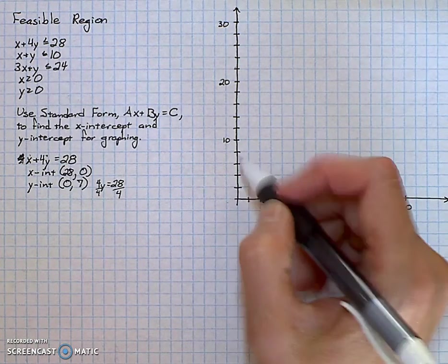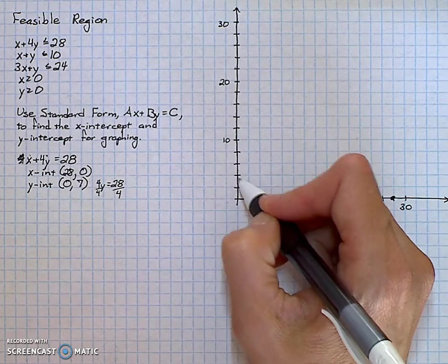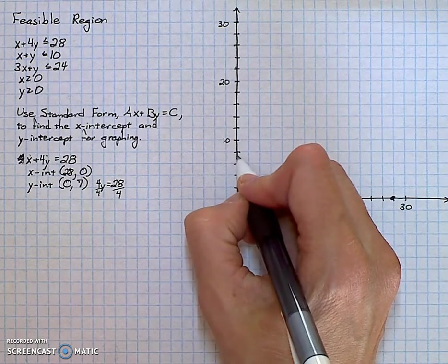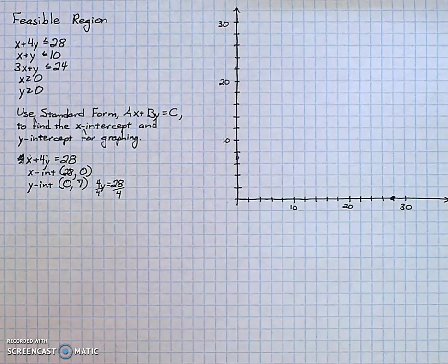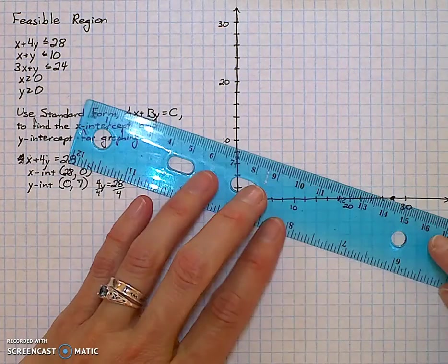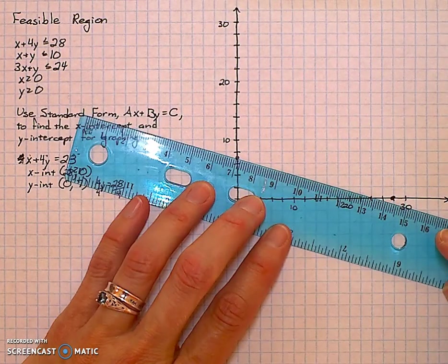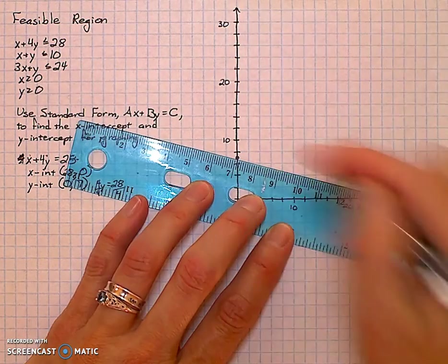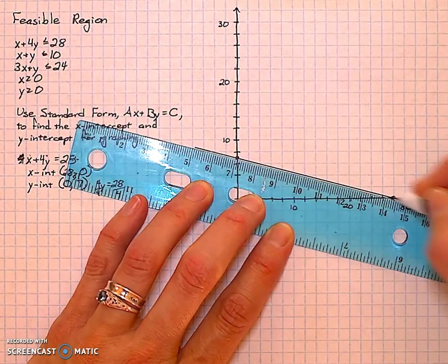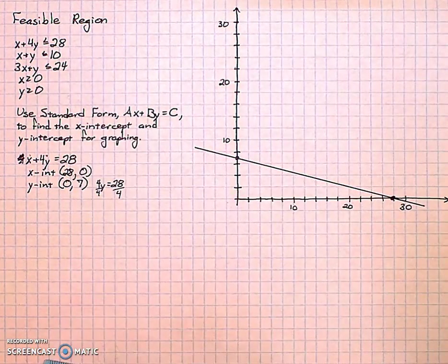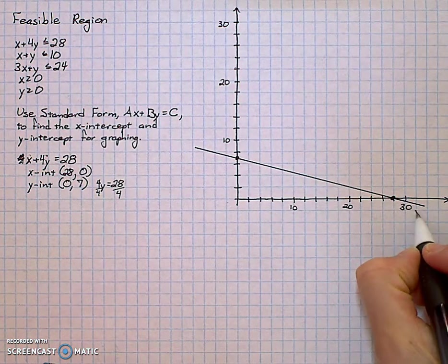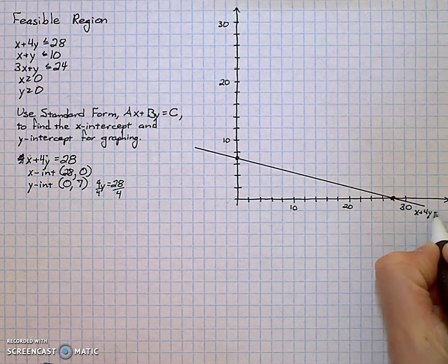Now I graphed or created my graph by counting by 2s. Now I draw a straight line.